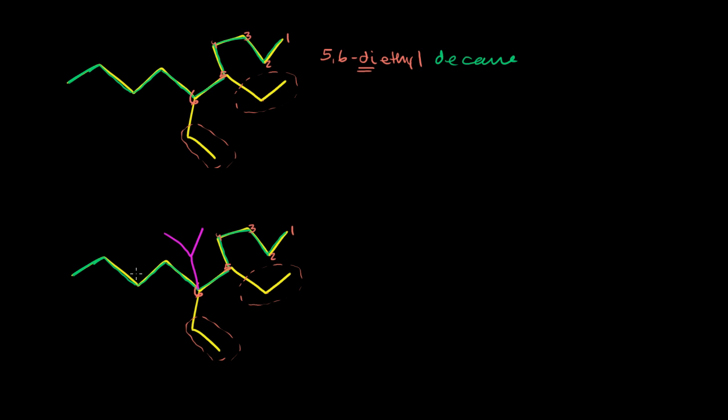And here we probably want to break it down a little bit. We still have the backbone. So it's still going to be a decane. But let's just do it step by step. So we know that this right here, this is an ethyl group. It's on the 5-carbon. So that is a 5-ethyl. This is another ethyl group on the 6-carbon. So that is a 6-ethyl.